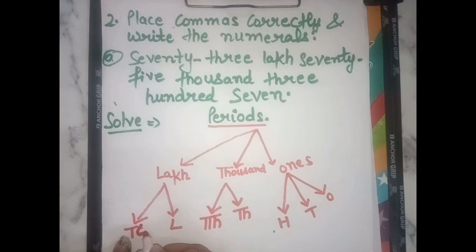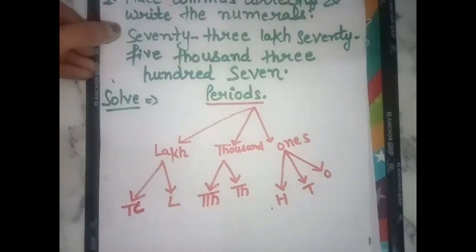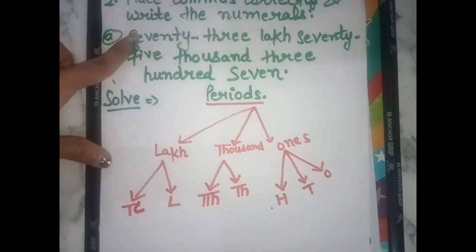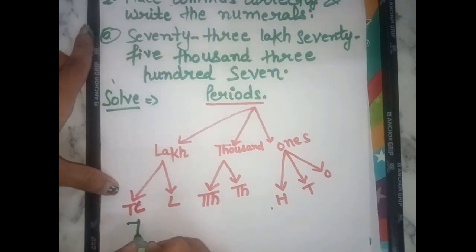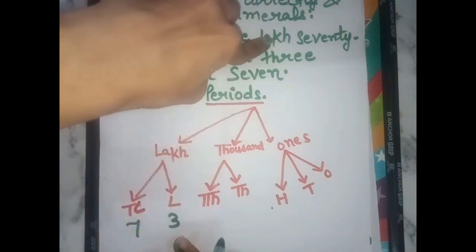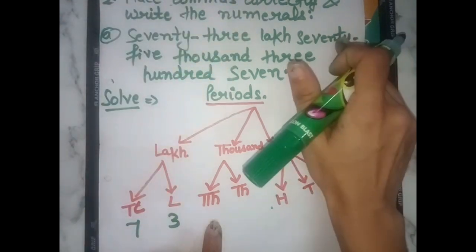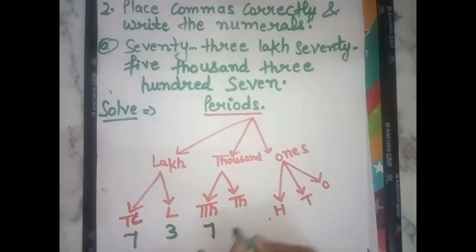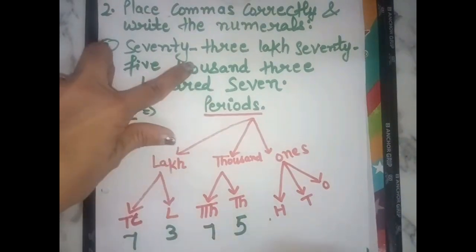Now, 73 lakhs — where do we write 73? 7 goes in ten lakh, and 3 goes in lakh. So that's 73 lakhs. Next is 75 — which gives us 75,000.